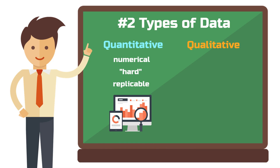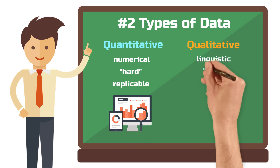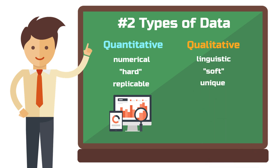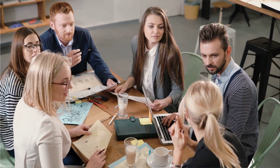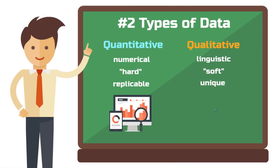Qualitative research relies on linguistic data that is soft and unique. Qualitative data are always context-dependent, meaning the basic conditions of your data collection environment must be taken into account during the investigation. This is particularly important in case studies. The great advantage of qualitative data is that they can be rich — as a researcher, you really get underneath the surface level and can attempt to explain why things are the way they are.